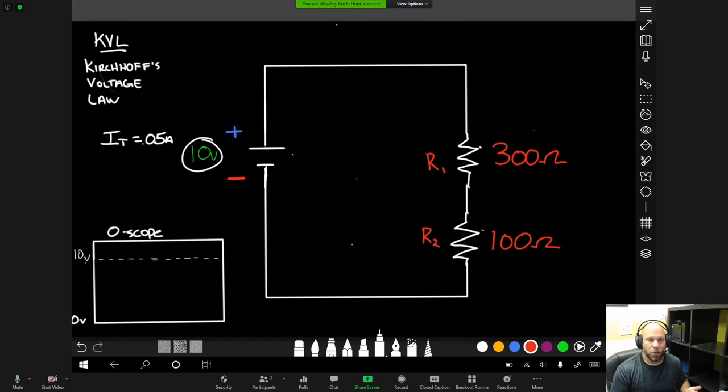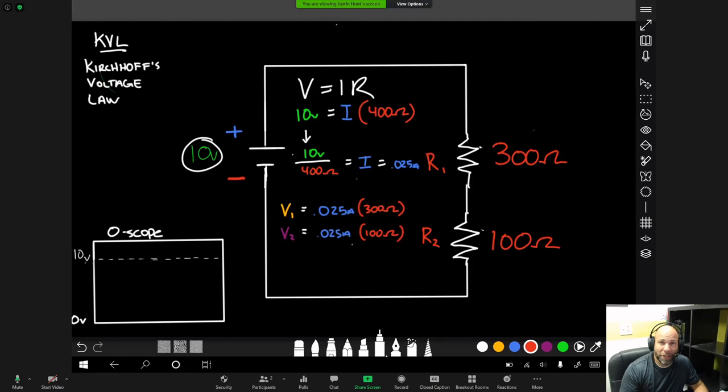V is equal to IR is going to serve us well. So why don't you go ahead and calculate the total current in the circuit and we'll come back together and do the voltage drops for each one of the resistors. I hope your calculations evaluated to the same 0.025 amps of total current that I got. So I've set up the next several equations using exactly that and we can walk through this together.